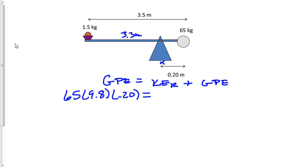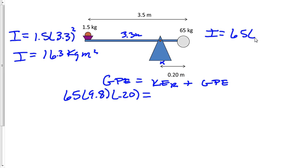So I'm going to need the moment of inertia for each of these objects. And since they are both point masses, I would equal MR squared. So I'll take 1.5 and multiply this by 3.3 squared. And the I for the projectile is going to be 16.3 kilograms meters squared. And the I for the load mass is going to equal 65 times 0.20 squared, and that's going to be 2.6 kilograms meters squared.